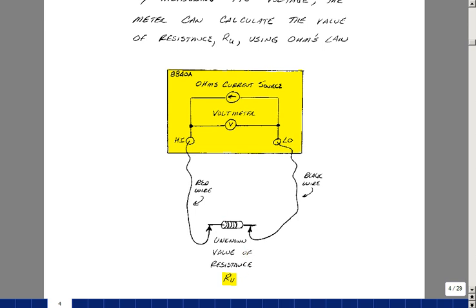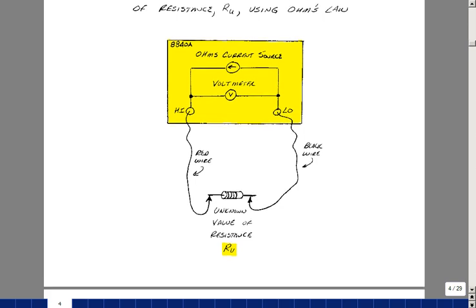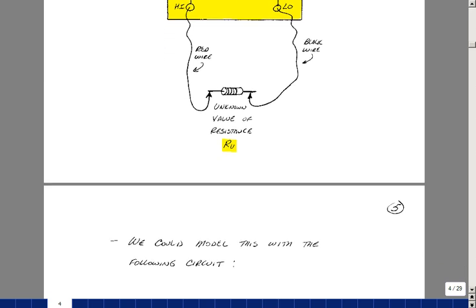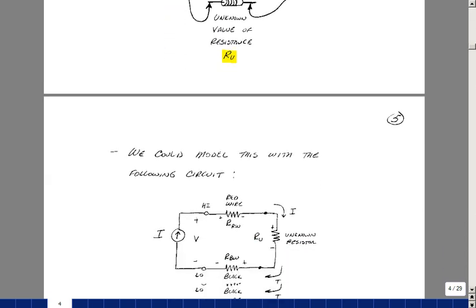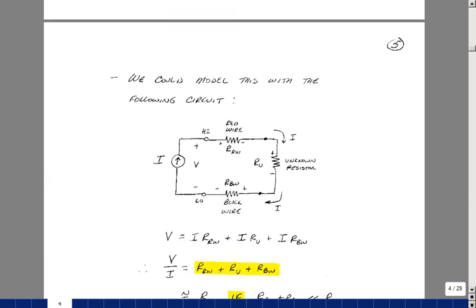The instrument forces a current to pass through the wires in the sample and come back. And then it measures the voltage across these terminals and then takes the ratio of those two. And that's what it displays on the screen.